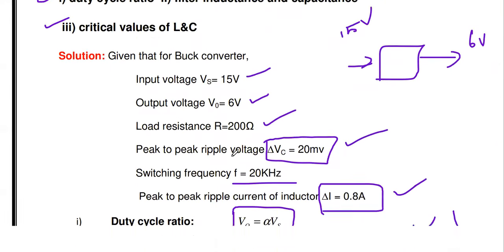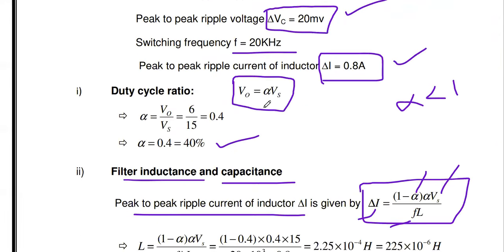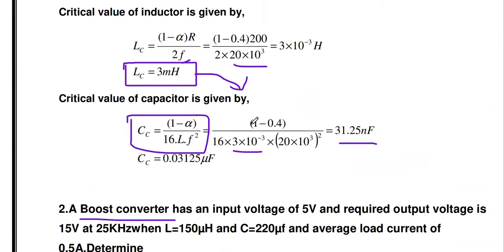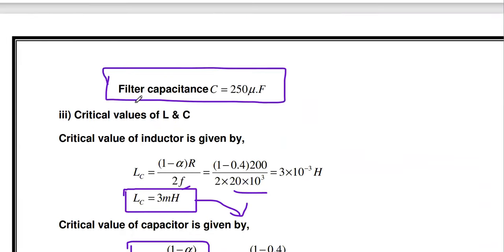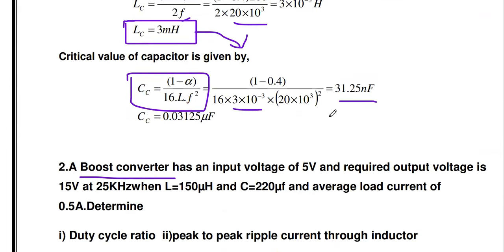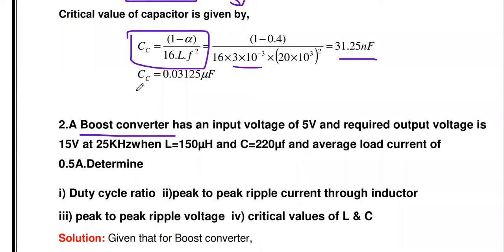So all three values are calculated for the buck converter: duty cycle from the output equation, filter inductance and capacitance from the ripple formulas, and critical values of inductor and capacitor. Now we are going to solve for the boost converter.